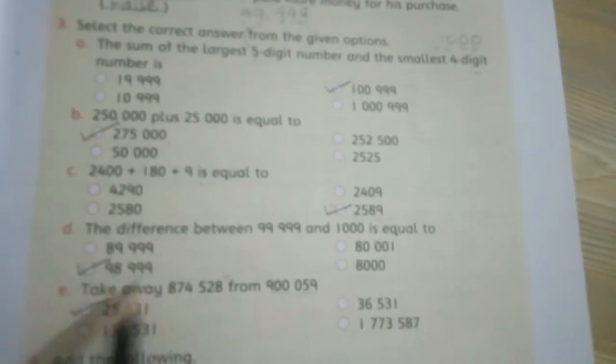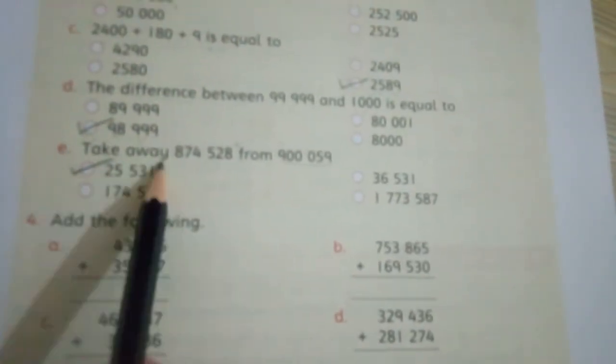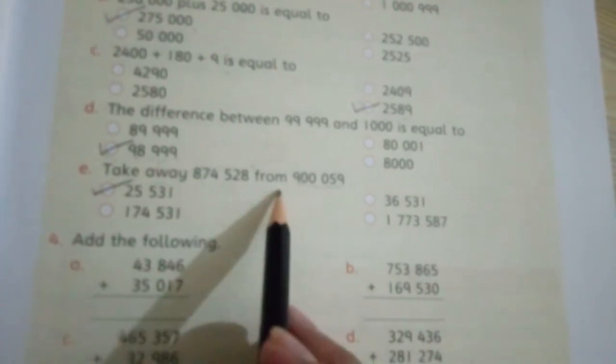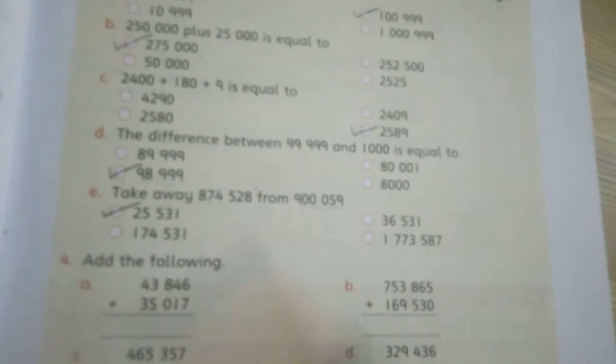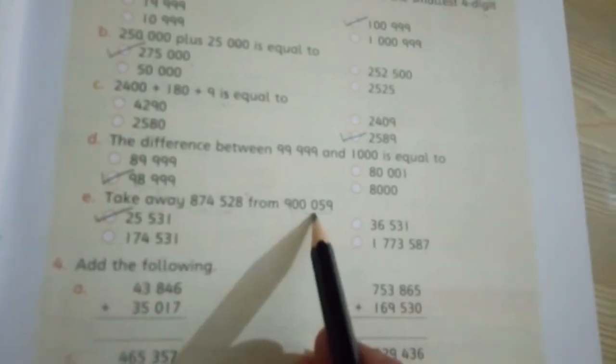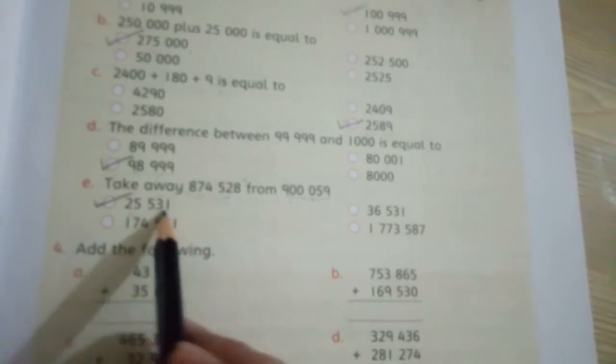Part E: Take away this from this. The larger number is nine hundred thousand and the smaller is eight hundred seventy four thousand. This is greater, so we will subtract the smaller number from this greater number. The answer is twenty five thousand five hundred and thirty one. You will do subtraction on the rough page.